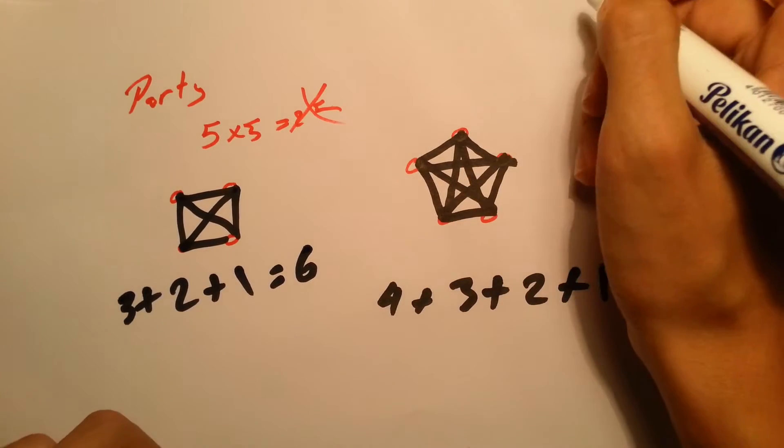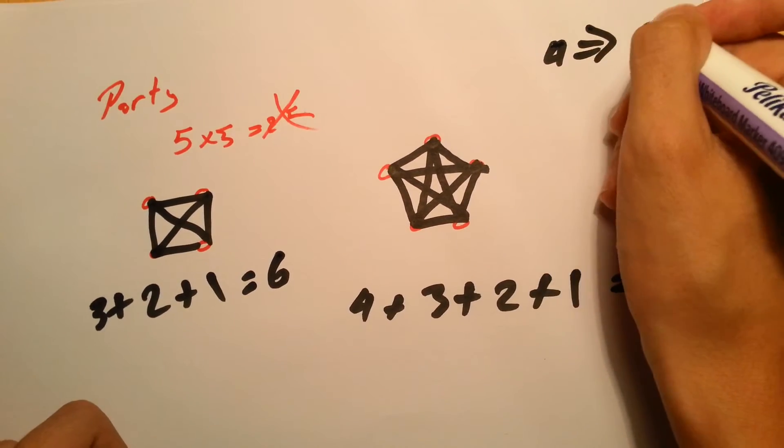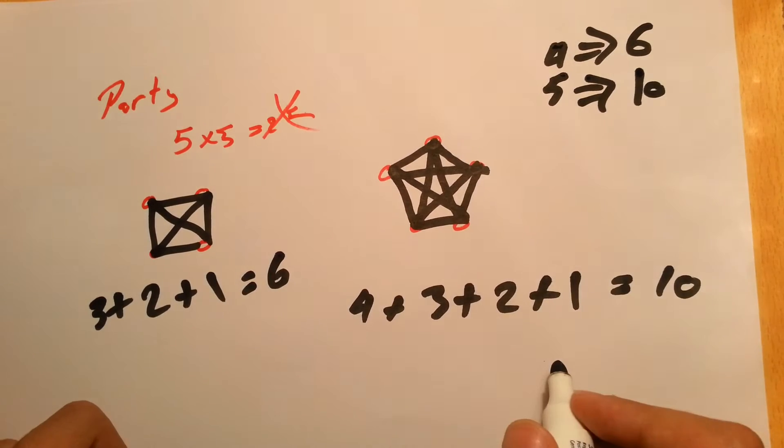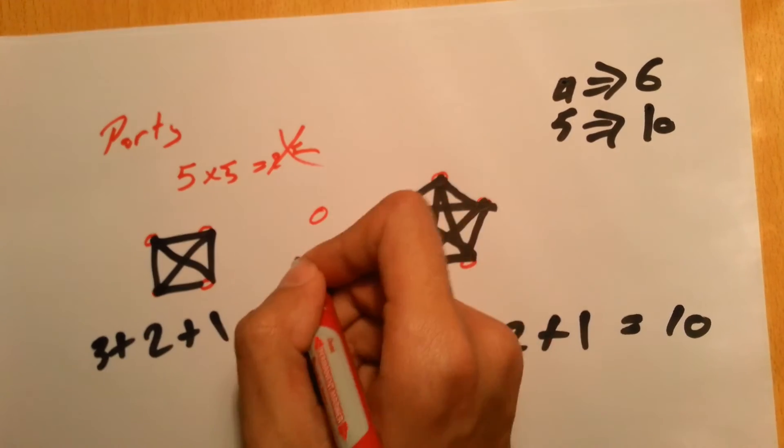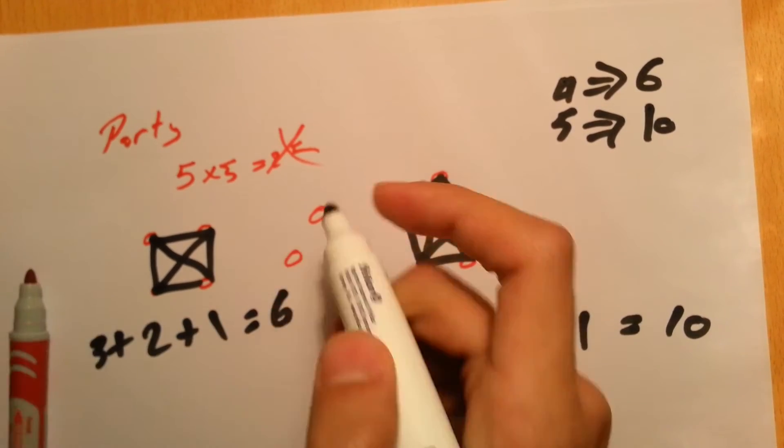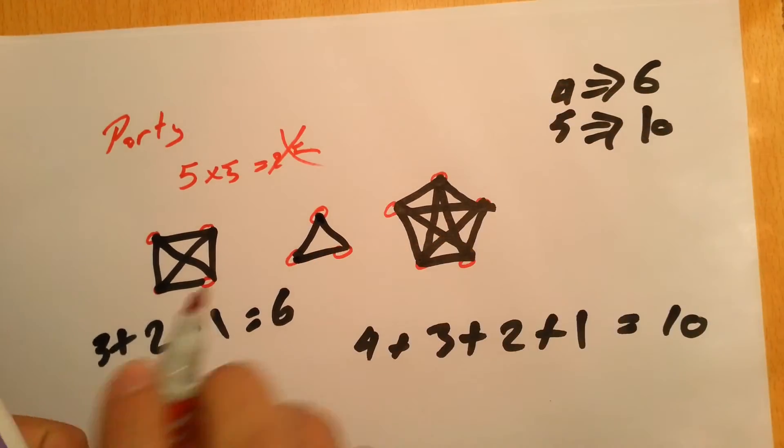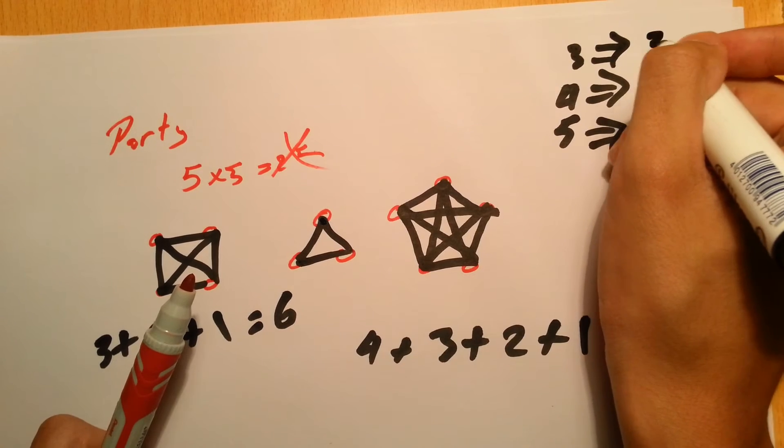Can we get a pattern? So now we have four people gives you six. Five gives you ten. Let's try three people. One, two, and three. This is easy. The first one will have two and then third one. So whenever we have three people we'll get three handshakes.